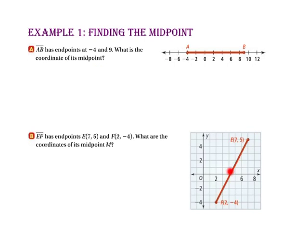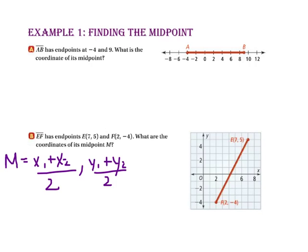For part B, segment EF has endpoints E at (7, 5) and F at (2, negative 4). Since we have a coordinate plane, we're going to have two coordinates, x and y, for each endpoint. Let's find the average of both the x-coordinates and the y-coordinates. Starting with the x-coordinates: E has an x-coordinate of 7 and F has an x-coordinate of 2, so we take the average of 7 and 2. 7 plus 2 is 9, divided by 2 is 4.5.